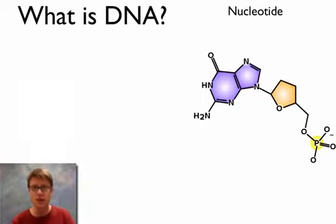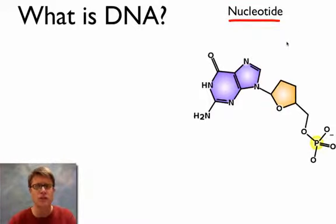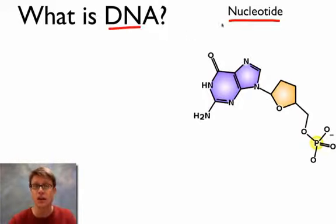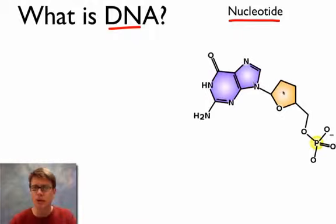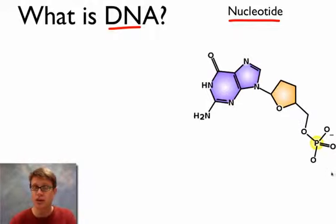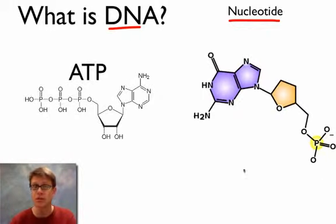Basically the building blocks of DNA are nucleotides. Just like carbohydrates are made of sugars and proteins are made of amino acids, the building blocks of nucleic acids — both DNA and RNA — are going to be nucleotides. If you take adenine and a ribose sugar and add three phosphates to it, then you have ATP, so you've seen something that looks a lot like a nucleotide before.